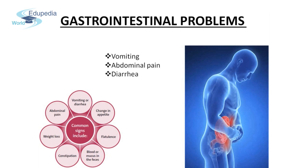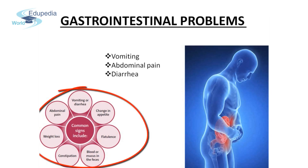In people suffering from these problems, the food may be digested but the nutrients are not supplied to the blood in the right quantity. In fact, the entire food just goes out in the form of stools. Other signs include change in appetite, flatulence, blood or mucus in the feces, constipation, weight loss, abdominal pain, and vomiting or diarrhea. These are the six common signs if a person is suffering from gastrointestinal problems.